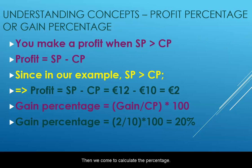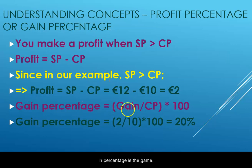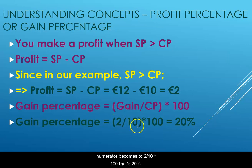To calculate the profit percentage or gain percentage, use this formula: gain percentage equals gain divided by cost price, times one hundred. In our example, we made a gain of two euros, so it's two divided by ten times one hundred — that's twenty percent. So the gain is twenty percent.